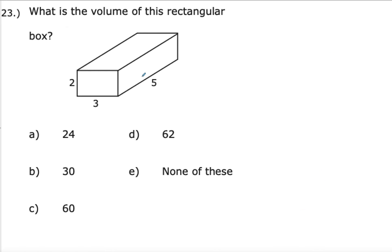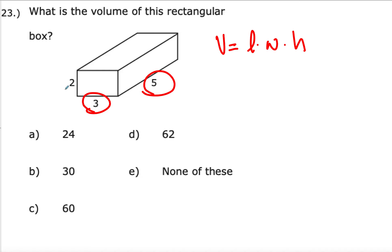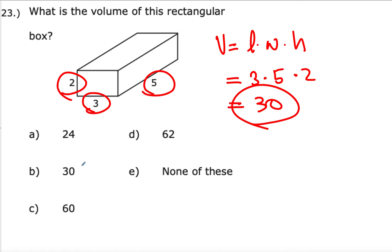Number 23: volume equals length times width times height. Multiplying 3 times 5 times 2 gives 30. Choice B is the answer.